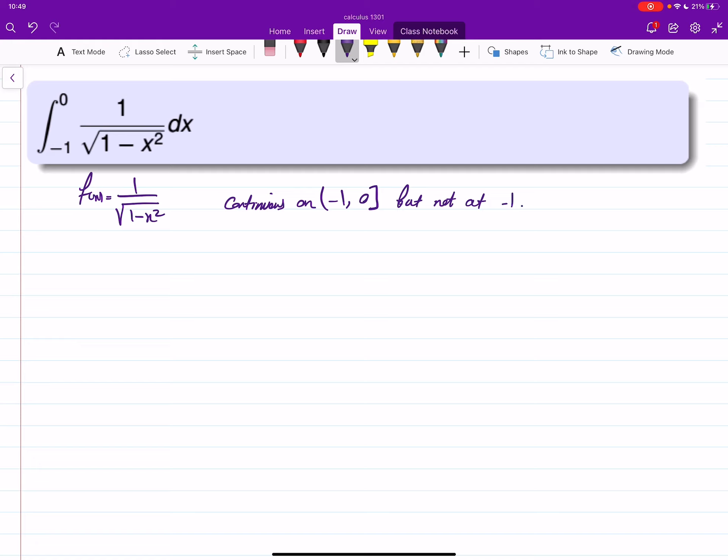So that means that the integral is improper, and what we do, we have to go first from t to zero, and then find the limit of t as t goes to negative one from the right.